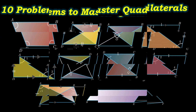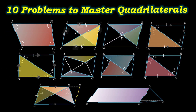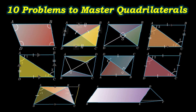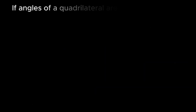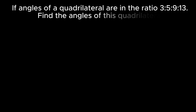In this video we will solve problems based on properties related to quadrilaterals. The first problem states that angles of a quadrilateral are in the ratio 3:5:9:13. We need to find the angles of this quadrilateral.